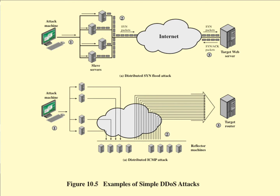Another DDoS attack would be the distributed ICMP attack shown in the bottom figure. In this case, there doesn't necessarily even have to be a virus or malware out in the network to make this one happen. The attacking machine will compromise a certain set of computers, and each one of those computers sends out messages to all of these other computers, which then send an ICMP echo packet to the target router.